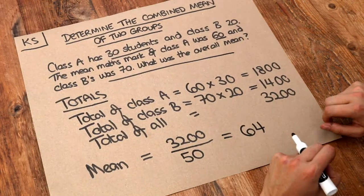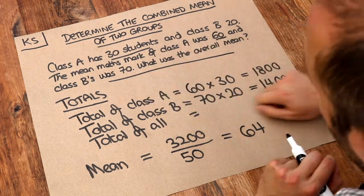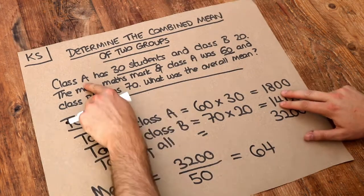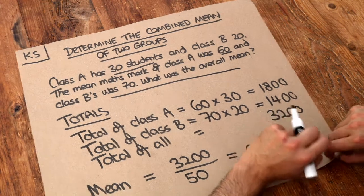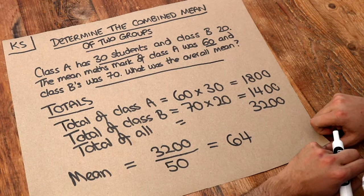And that sounds about right. We expected the mean to be somewhere between 60 and 70 marks. We expected it to be slightly closer to class A's average of 60 marks because there's more students in class A and indeed that is slightly closer to 60 than it is to 70.